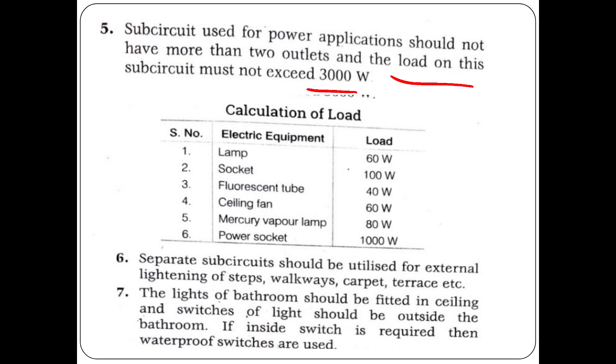Load values: socket is 100W, fluorescent tube is 40W, ceiling fan is 60W, mercury vapor lamp is 80W, and a power socket is 1000W.